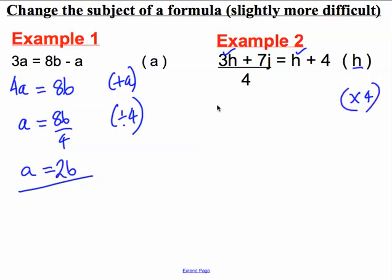This would leave me simply with the numerator 3h plus 7j on the left hand side and I would get 4 multiplied by everything that was on the right hand side. That is 4 times h plus 4. Now that I've got a bracket, let's multiply out the bracket. That would be equal to 4h plus 16.